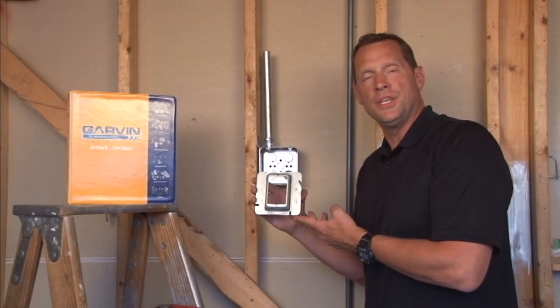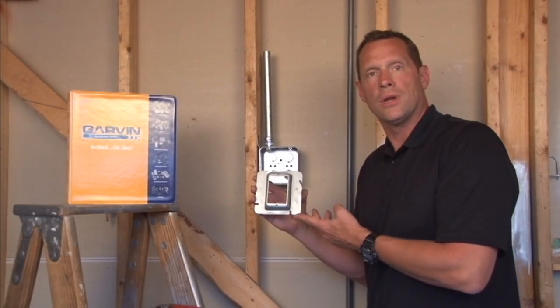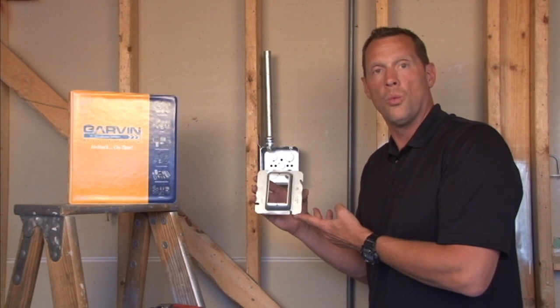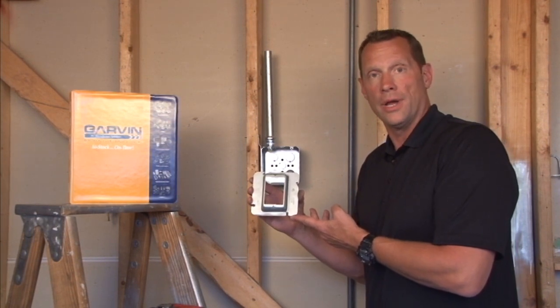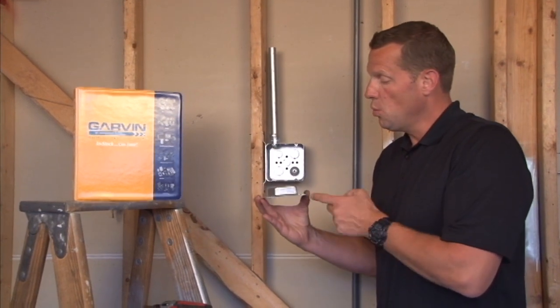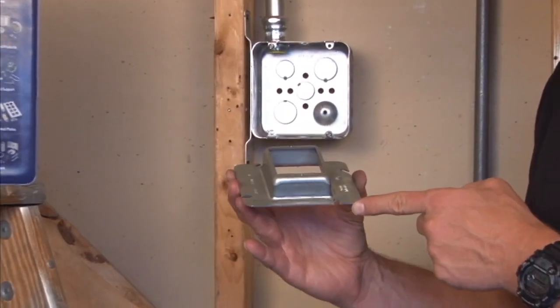Part number 72C15 is a 4 and 11 sixteenth inches square one gang drywall ring that is raised one inch for plastered tile or drywall.